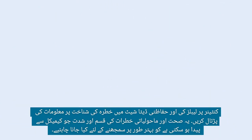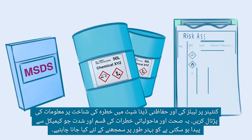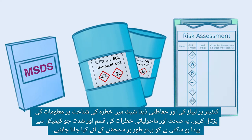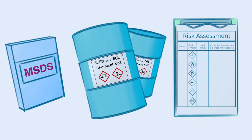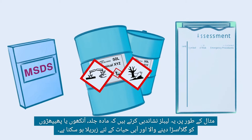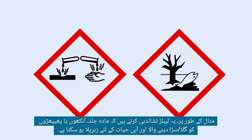Check the labels on the container and the information on hazard identification in the Safety Data Sheet. This should be done in order to better understand the type and severity of hazards to health and environment that the chemical may pose. For example, these labels indicate that the substance may be corrosive to skin, eyes, or lungs.